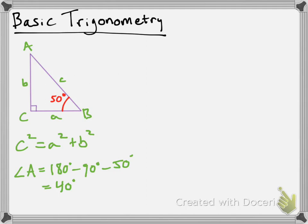Let's change it up a little more. Let's get rid of those side lengths and place in some measurements. Let's say I have 3 meters for side length a, and I don't know what side length c is. We're going to make use of SOHCAHTOA — sine, cosine, and tangent — to figure that out.